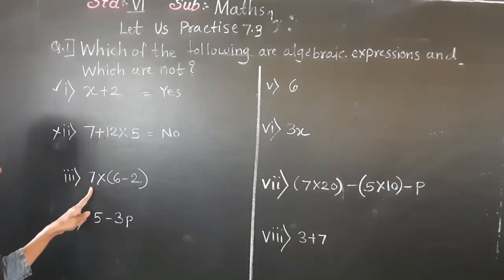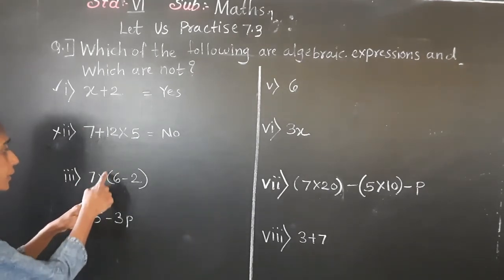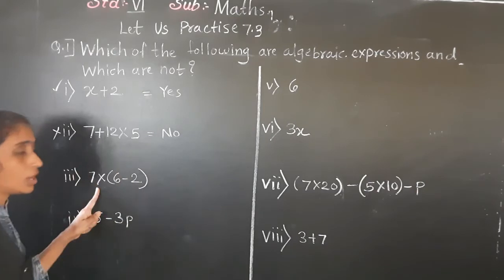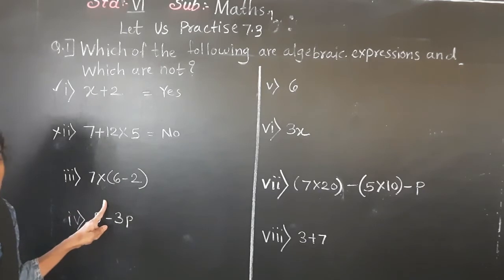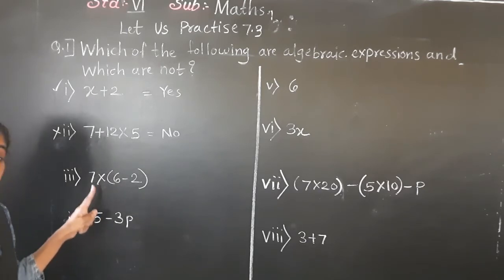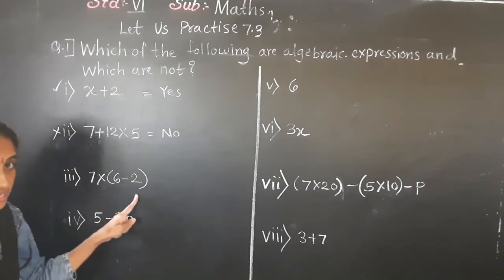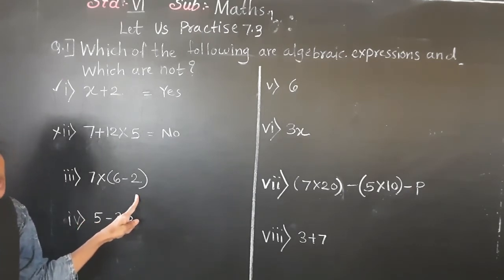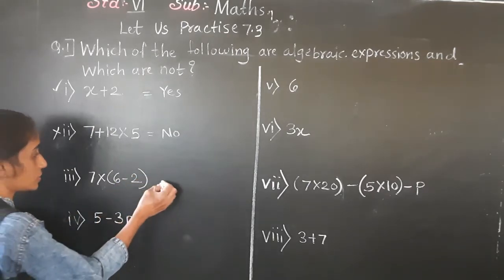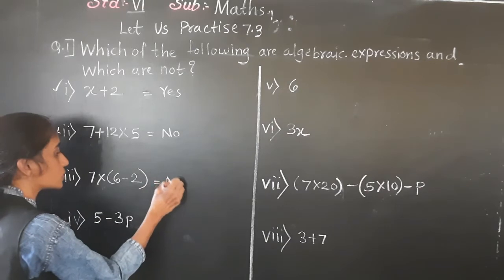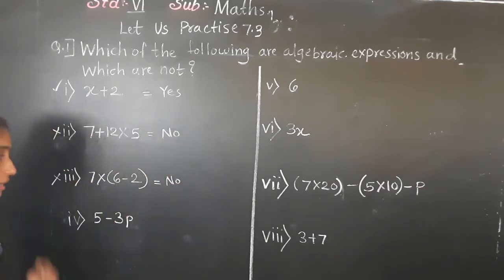The third example: 7 multiplied by (6 minus 2). Basic operations are given and numbers are given, but there is no variable. So this is also not an algebraic expression.